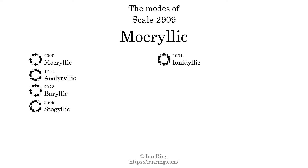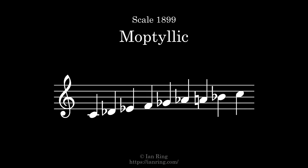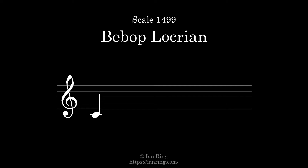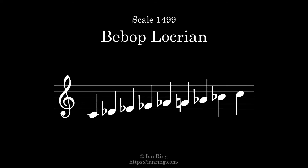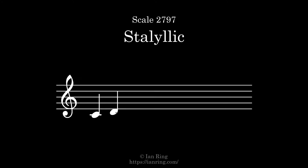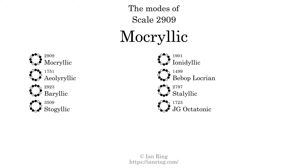The fifth mode is scale 1901, also known as Ilarillic. It sounds like this. The sixth mode is scale 1797, also known as Ilarillic. It sounds like this. The seventh mode is scale 2797, also known as Ilarillic. It sounds like this. The eighth and last mode is scale 1723, also known as JG Octatonic. It sounds like this.